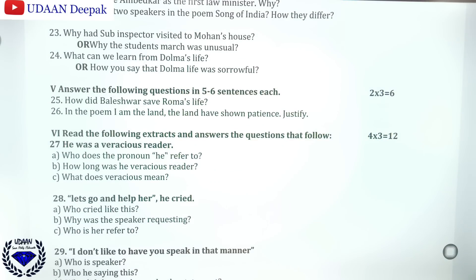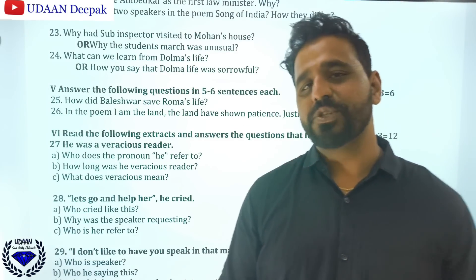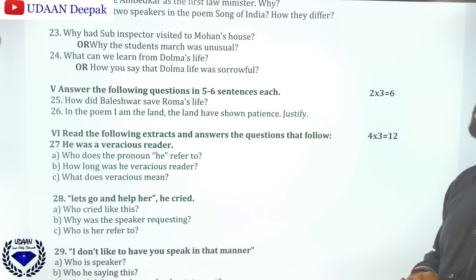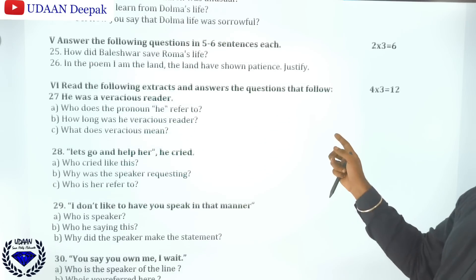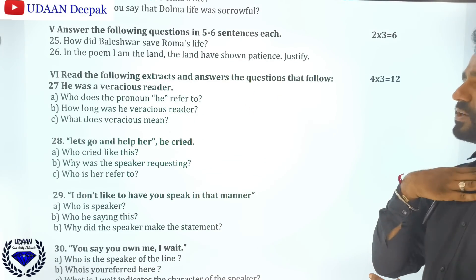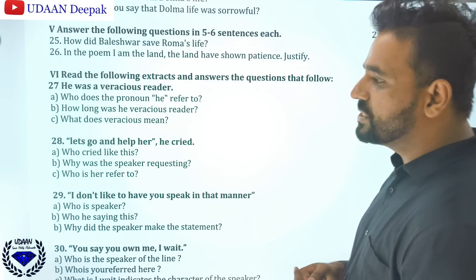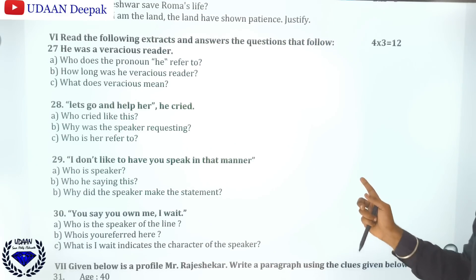Then you will have two questions of three marks each, requiring five to six sentences. You should write at least half a page. For example: 'How did Baleshwar save Roma's life?' and in the poem 'I Am the Land,' justify that the land has shown patience. You will also find four extract-based questions of three marks each — for example: 'He was a voracious reader' and 'Let's go and help her, he cried.'